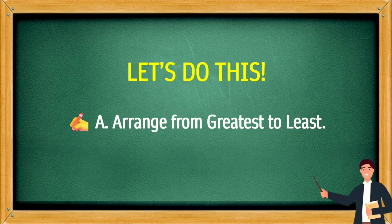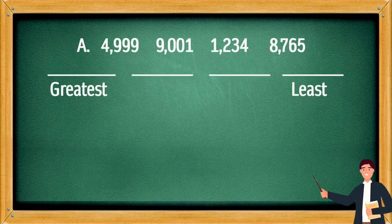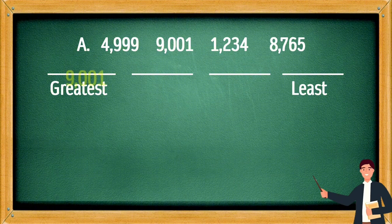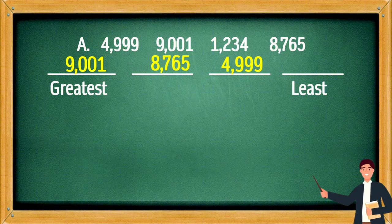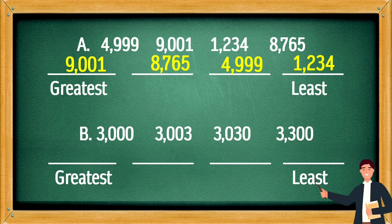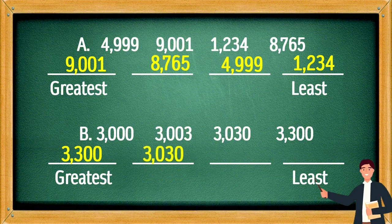Let's do this! Arrange from greatest to least. First set: the greatest is 9,001, then 8,765, then 4,999, and the least is 1,234. Second set: the greatest is 3,300, then 3,030, then 3,003, and the least is 3,000.